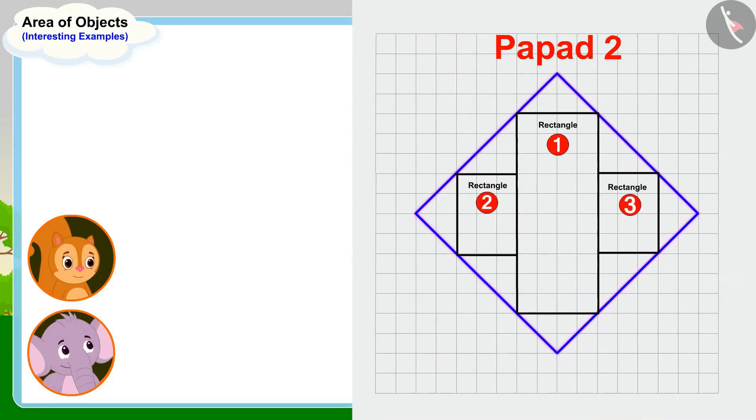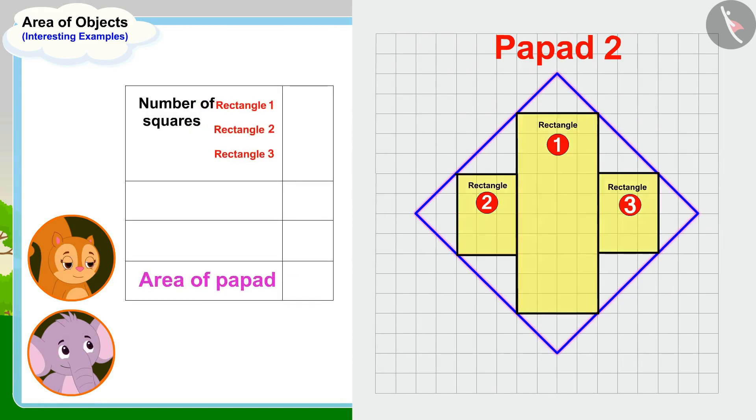She then wrote down the number of squares falling in those rectangles in this way. Now Chanda wrote the number of the remaining half squares, 28, or 14 full squares. In the end, Chanda used addition in this way and wrote down the total number of squares covered by this popper: 98.